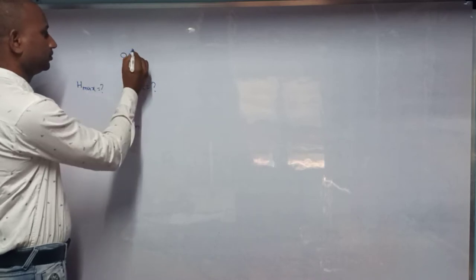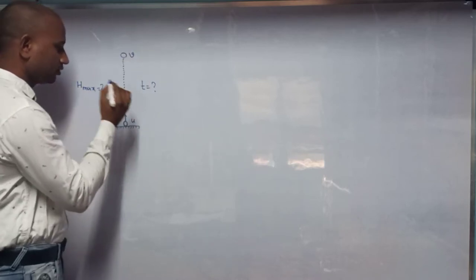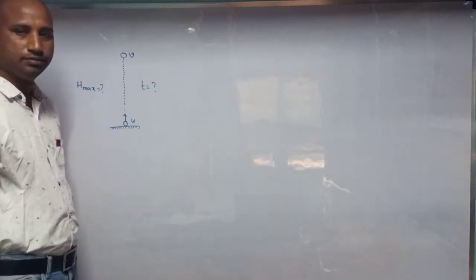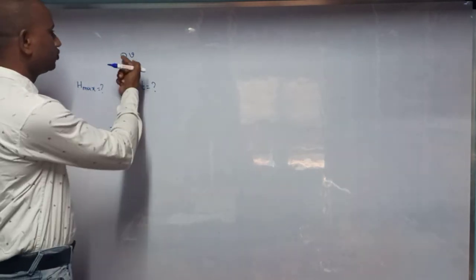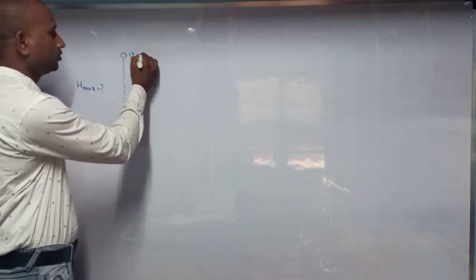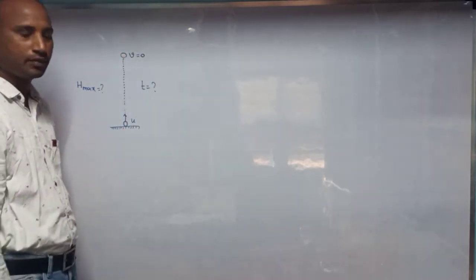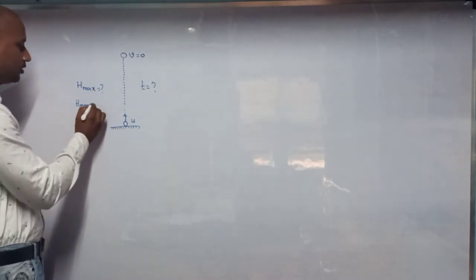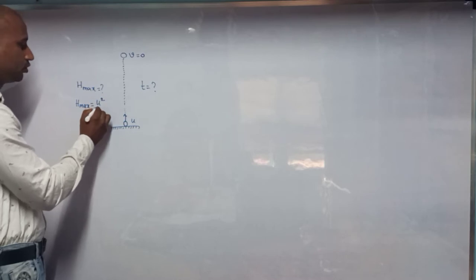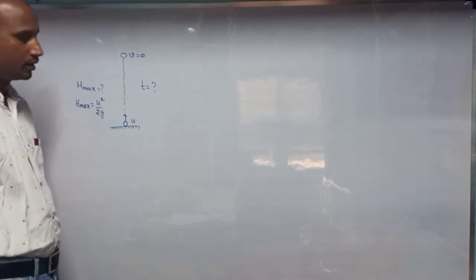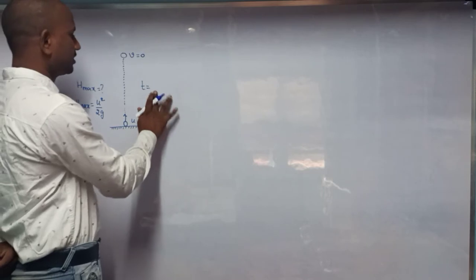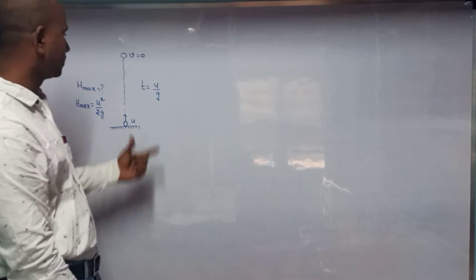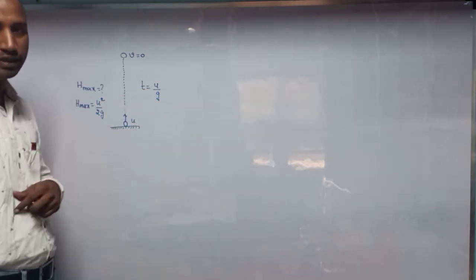Whenever the body reaches maximum height, what is the final velocity? The initial projection velocity is U. When it reaches maximum height, its final velocity V equals zero. Maximum height H_max equals U² divided by 2g. Time of ascent T equals U by g. We already discussed these two points in previous classes.